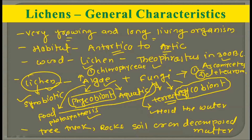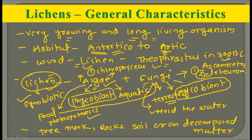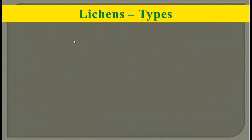To summarize general characteristics: lichens are very slow growing and very long-living organisms. Their habitat ranges from Antarctica to the Arctic. The word 'lichen' was first used by Theophrastus in 300 BC. Lichens are the combination of algal and fungal partners — the algal partner is called phycobiont and the fungal partner is called mycobiont. The algal partner may belong to Chlorophyceae while the fungal partner may belong to Ascomycetes, Deuteromycetes, or other fungal groups. Their symbiotic association allows them to inhabit tree trunks, rocks, soil, and decomposed matter.